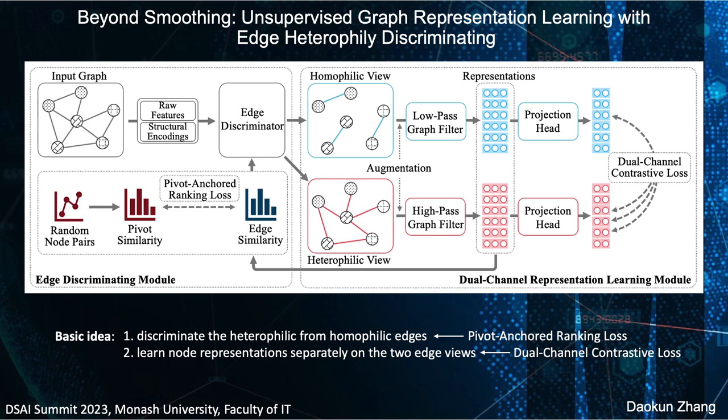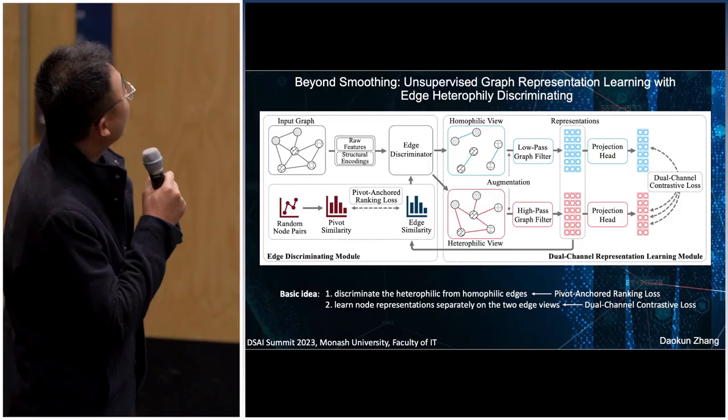I'd like to share my paper, called 'Beyond a Small Thing: Graph Representation Learning with an Agent for Fully Discriminating.' This is joint work with my co-supervised PhD student Xinyu, co-supervised by Shrepa and Vincent Lee.